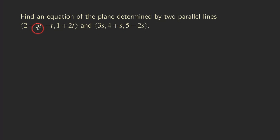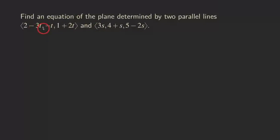You can see that the coefficient of t — if you take each of the coefficients of t and multiply by negative 1, you are going to get the coefficient of s. As you can see, if you multiply negative 3 by negative 1, you get 3; multiply this by negative 1, you get 1; multiply by negative 1, we get negative 2.